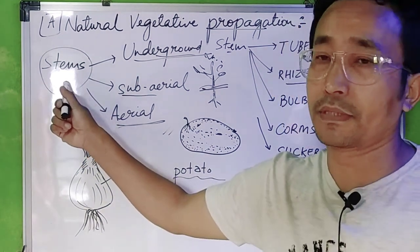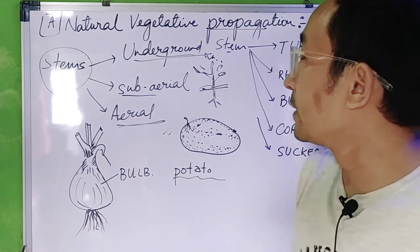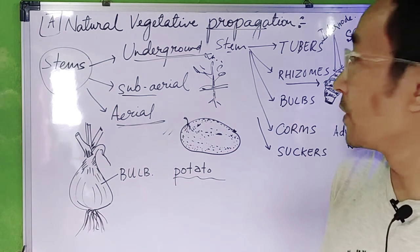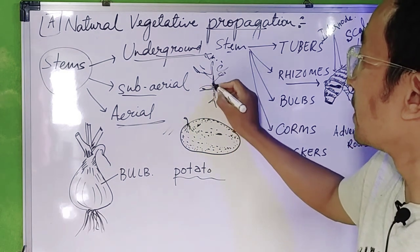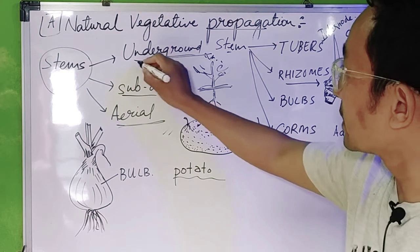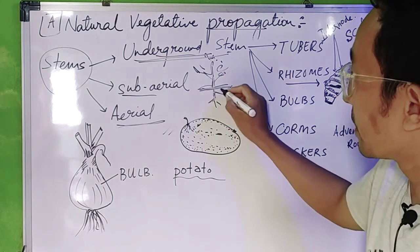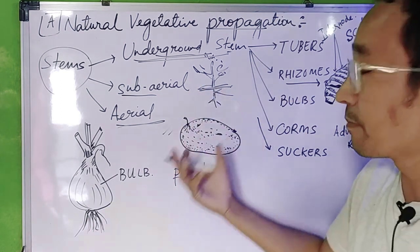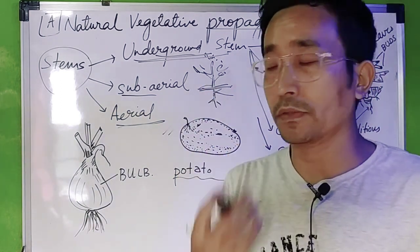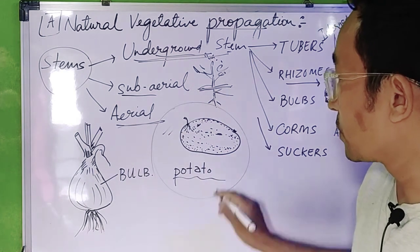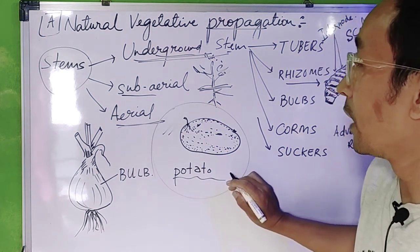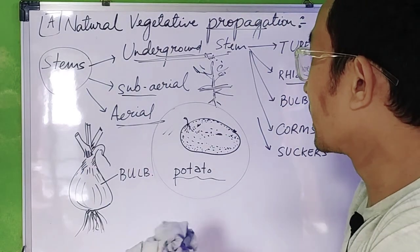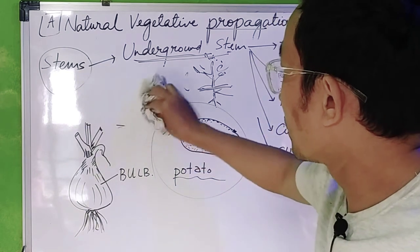Next, we have stem. There are three types of stems: underground stem, sub-aerial stem, and aerial stem. The underground stem can be used as a storage stem. For example, if you have a potato, it can be used as an underground stem. If you have a sub-aerial stem, it can form branches. So basically, it is the stem.